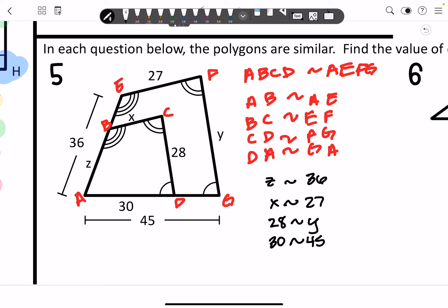So you could set up an extended proportion and solve it. Or you can do it one at a time. I'm going to use our first one and our complete one. So Z over 36 is equal to 30 over 45.